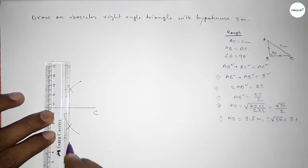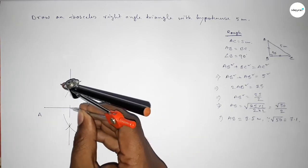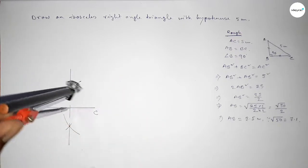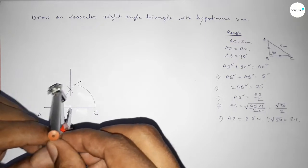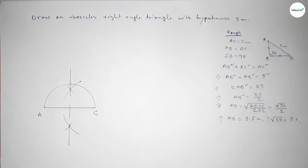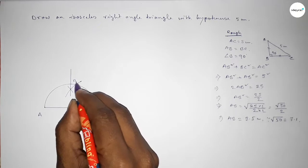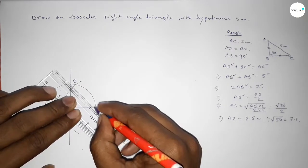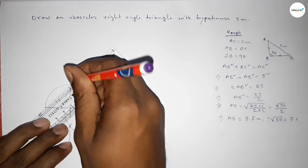Join the two intersection points to draw the perpendicular bisector. Next, place the compass at the midpoint O and take the distance OA (equal to OC) to draw a semicircle. The bisector and the semicircle meet at point B. Now join B to C, then join A to B.